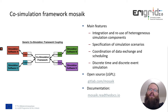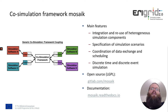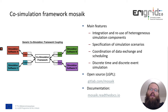Mosaic allows coupling of simulation models which follow both the discrete time and the discrete event approach — models executed by a fixed step size, or models which have events so they are not executed in a fixed step size but only when some events occur. Mosaic is available as open source software under the LGPL license. You can find the code at gitlab.com/mosaic and documentation at mosaic.readthedocs.io.